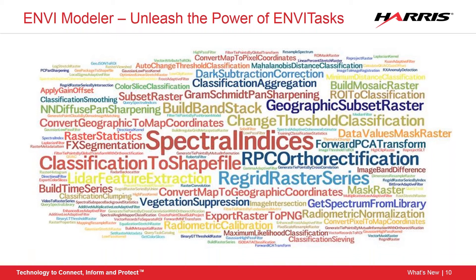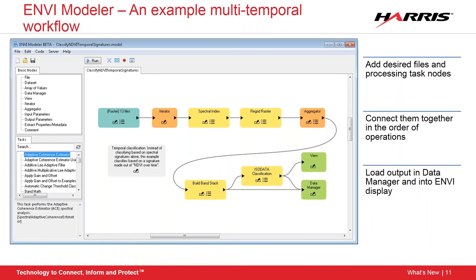Here's a workflow example that performs unsupervised classification on a temporal stack of spectral indices after re-gridding the data to the same spatial extent and resolution for 13 different rasters. Without the modeler, you'd have to manually re-grid 13 images, calculate spectral indices 13 times, stack them, and run ISODATA classification — a lot of time-consuming button-clicking. With the ENVI Modeler, you simply click and drag a few nodes together and can process all your data with ease.